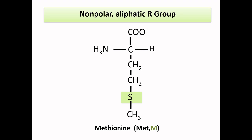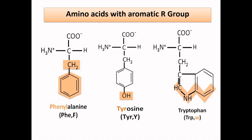Now let's move to our Group 2, which contains amino acids that are aromatic. This group contains three amino acids: phenylalanine, tyrosine, and tryptophan. I have not mentioned polar or non-polar in the heading because it has two non-polar amino acids — phenylalanine and tryptophan — and one polar amino acid, which is tyrosine.